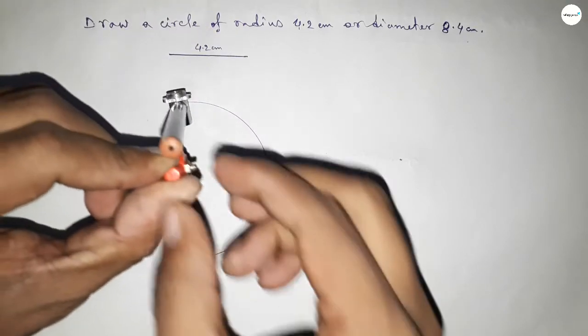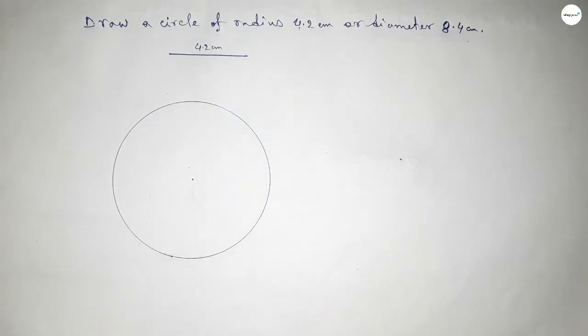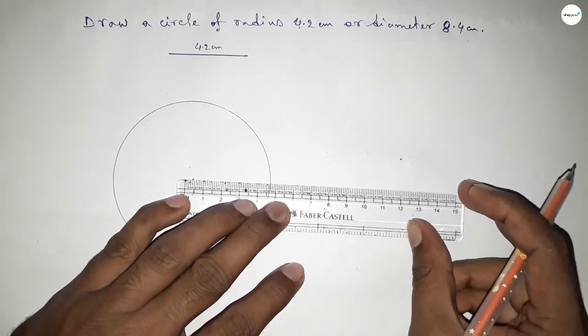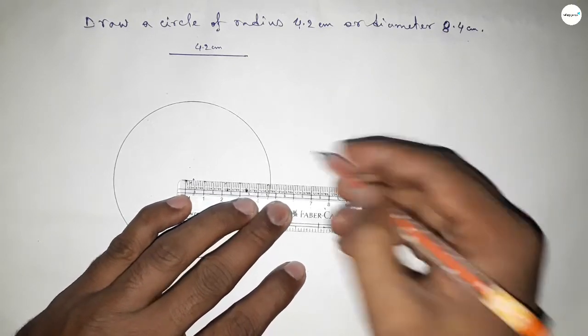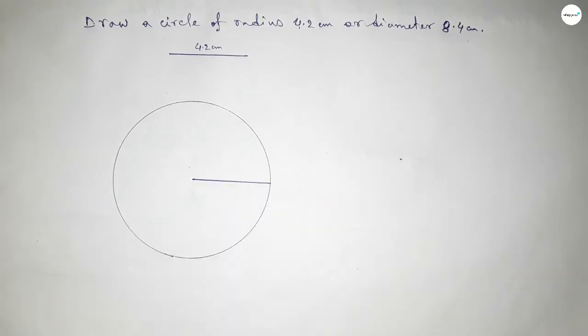Drawing an arc in this way, which represents a circle with radius 4.2 centimeters. Now joining this side.